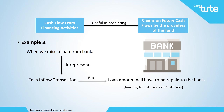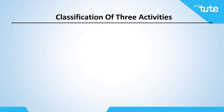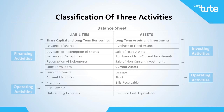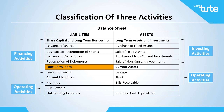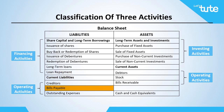Let's understand the difference between these three activities by classifying some items with the help of a balance sheet and an income statement. Looking at the liability side of the balance sheet — under share capital and long-term borrowings — the issuance of shares, buyback or redemption of shares, issuance of debentures, redemption of debentures, long-term loans, and loan repayment would classify as financing activities. Under current liabilities, creditors, bills payable, and outstanding expenses would classify as operating activities.